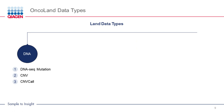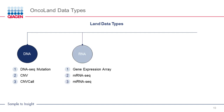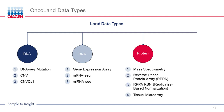Another way to look at the data is based on data types. Oncoland contains multiple data types. At the DNA level, we have somatic mutations and copy number variations. At the RNA level, we have sequencing data based on microRNA or mRNA, as well as expression data from arrays. At the protein level, we have MS, RPPA, and RPPA-RBN, as well as tissue microarray data. At the epigenetic level, we have methylation data.